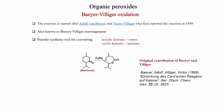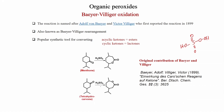This was the first report by Baeyer and Villiger. The substrate was menthone, and when treated with monopersulfuric acid, they converted menthone to a lactone. As you can see, the more substituted carbon atom migrated to give this lactone. They also converted tetrahydrocarvone with the same acid to another lactone. Here also the more substituted carbon atom, containing the methyl group, has migrated. After this discovery, many applications were studied.